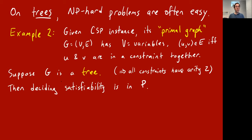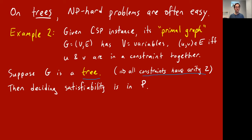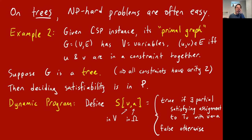Now suppose the underlying graph is a tree. That's a particular situation — it means you must be working with a binary CSP, one where all constraints have arity two. If you have a constraint involving three variables, the primal graph will have a triangle and won't be a tree. But there are interesting CSPs of arity two, like the three-coloring problem. And if your CSP instance's primal graph is a tree, you can decide whether it's satisfiable in polynomial time using a dynamic program.